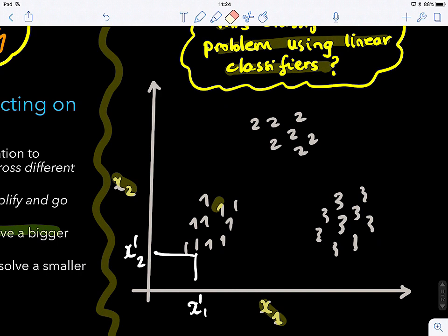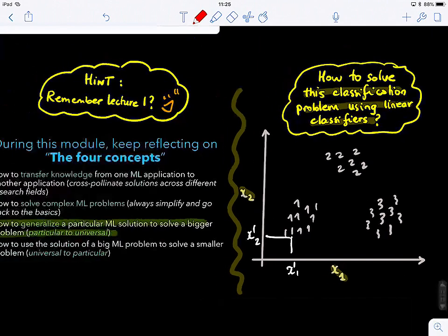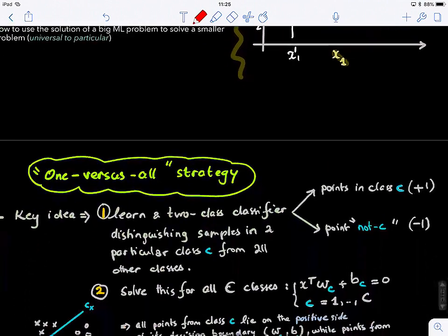So any ideas on how can we potentially classify these guys using a linear classifier? Like a set of linear classifiers, not only one. Can you assign SVMs with one versus all? Very good, one versus all. So we can solve one by one, basically, and then fuse all those solutions together.